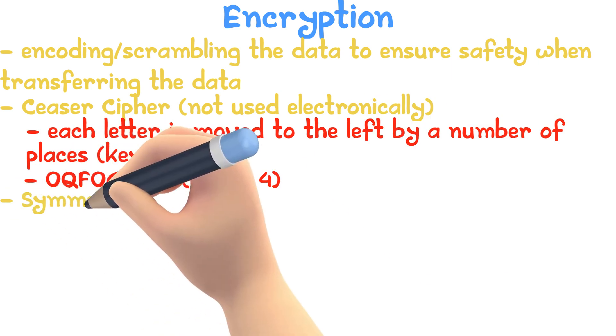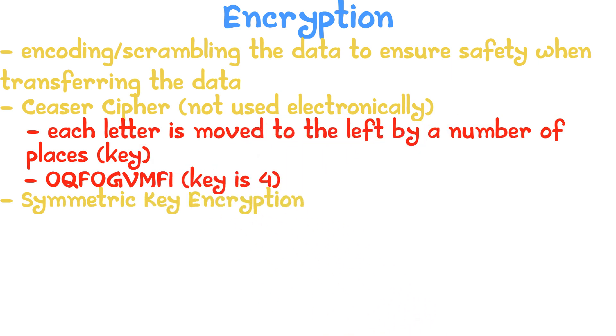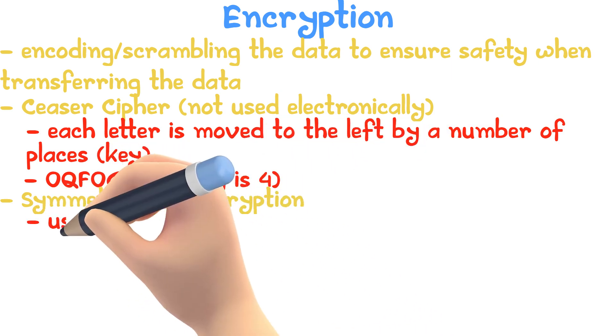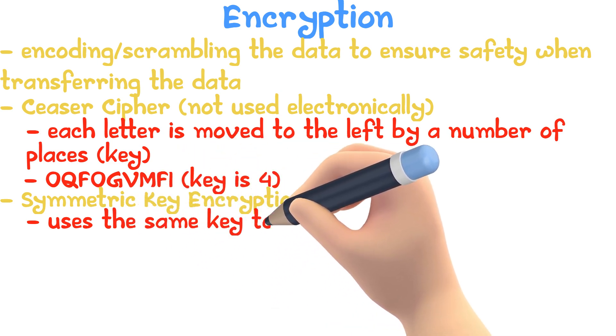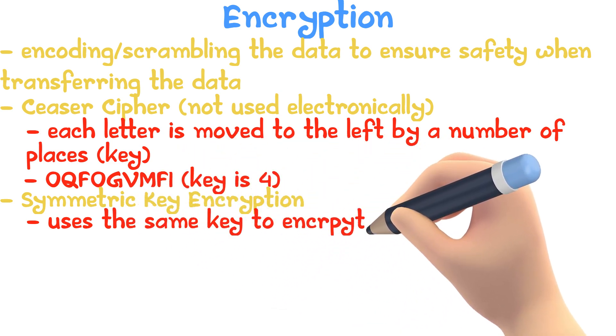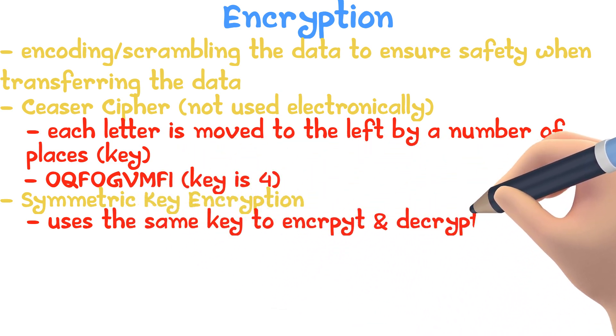Symmetric key encryption. This method of encryption uses the same key at both ends, meaning it needs the same key to encrypt and decrypt.